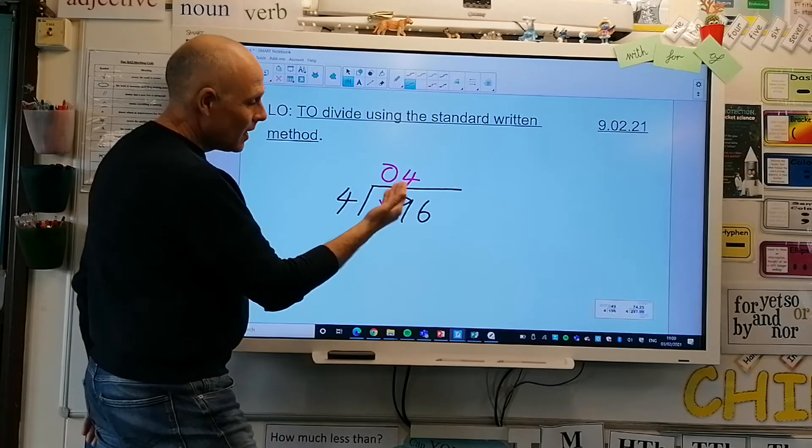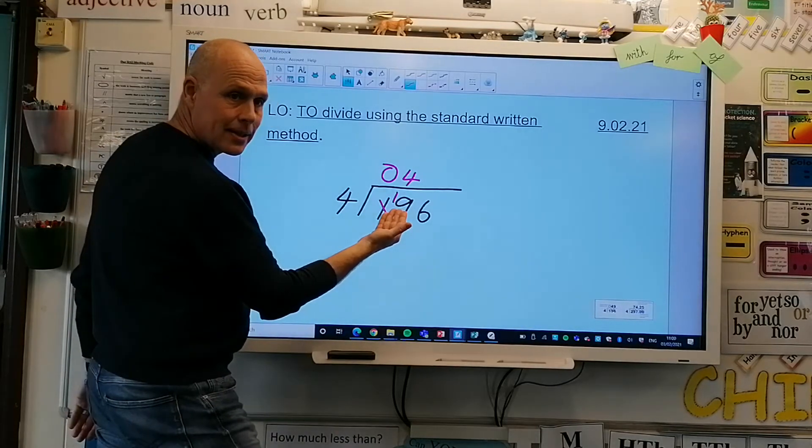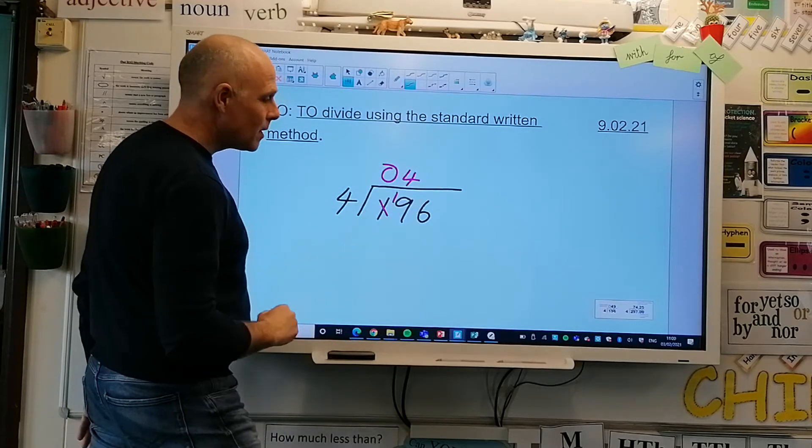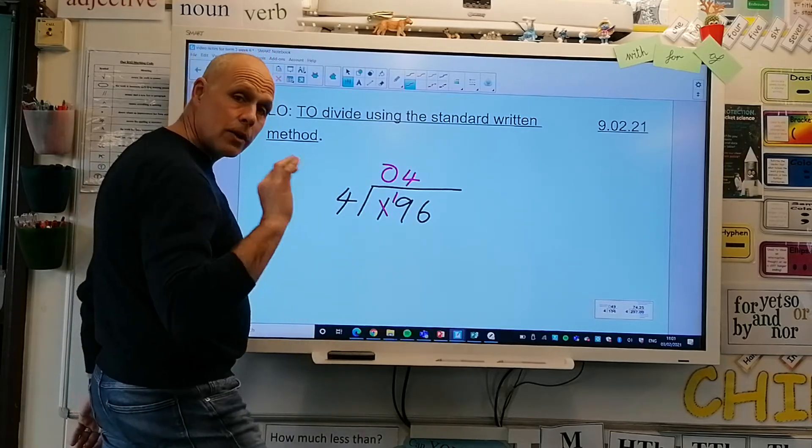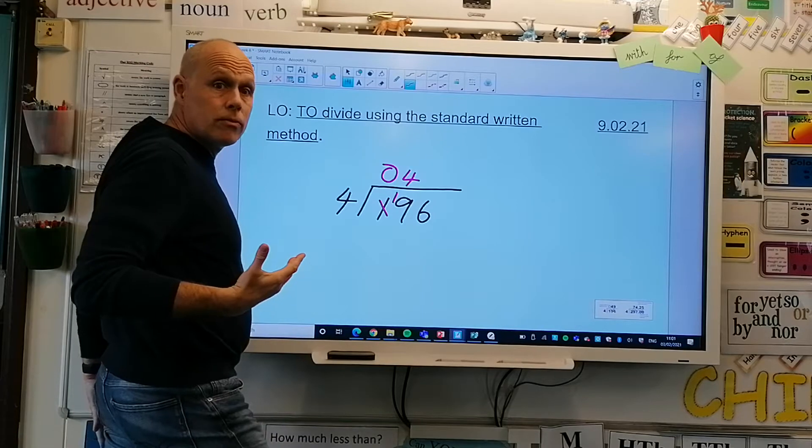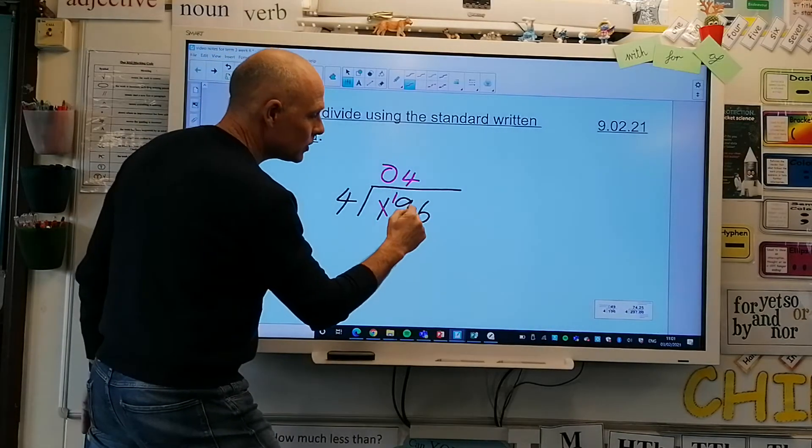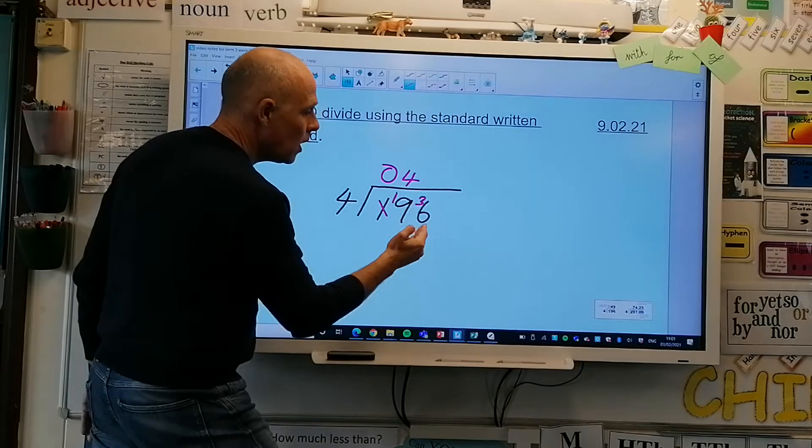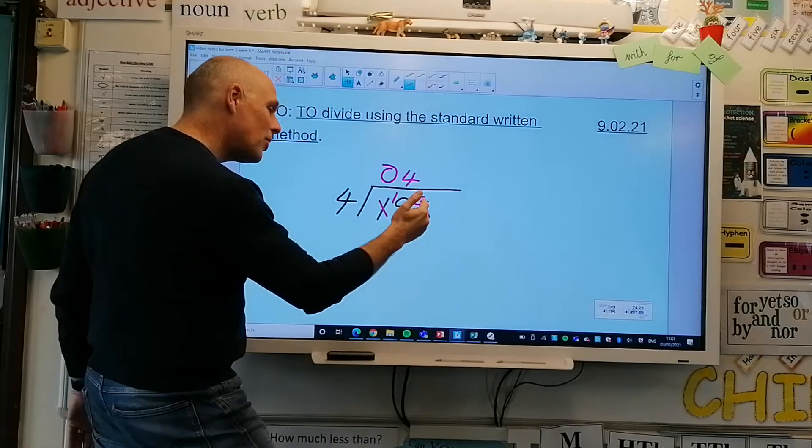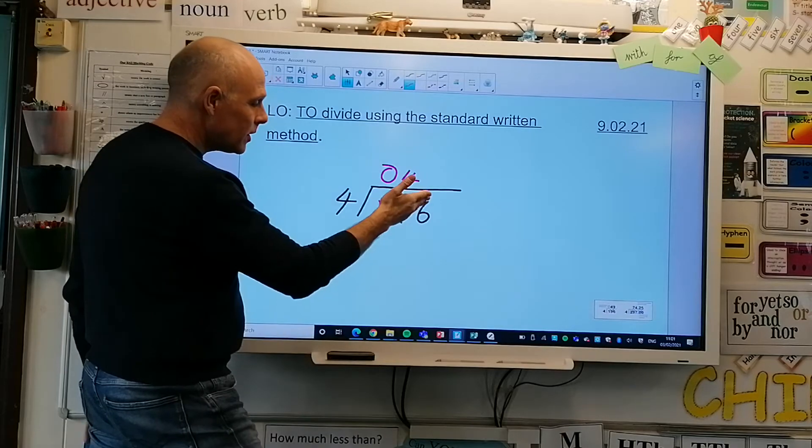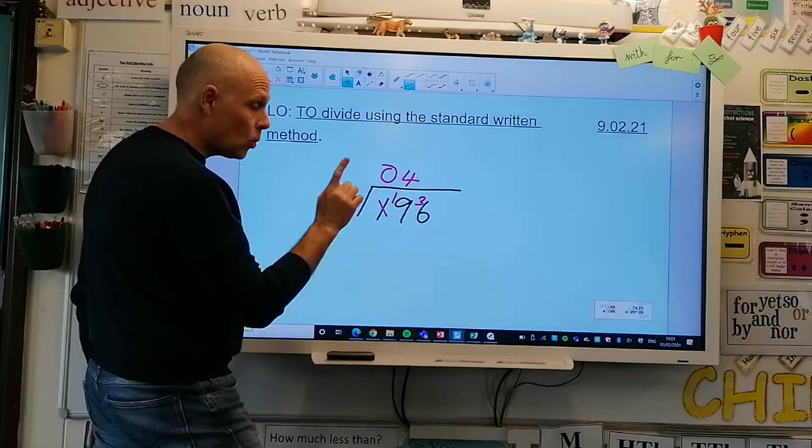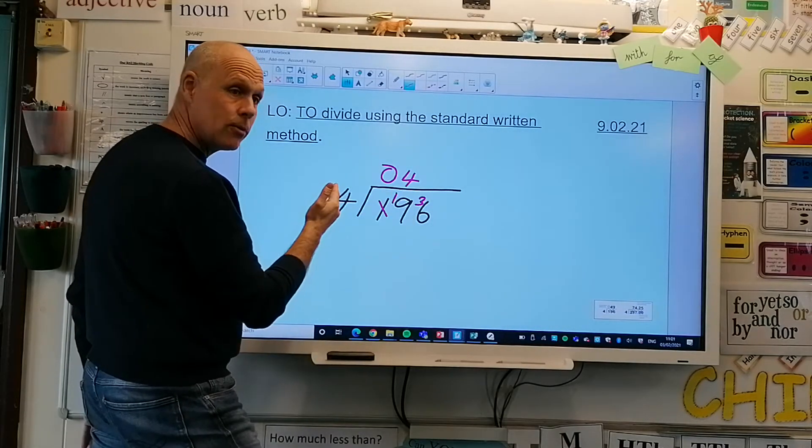If I take that 16 from the 19 I've got how many left? Three, fantastic, thank you. So I've got 3 left over, I can't just forget about them. I've got to exchange them. 3 tens exchange for 31, so I've now got 36 in my ones column. 36 divided by 4, or 36 shared between 4.